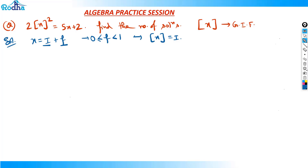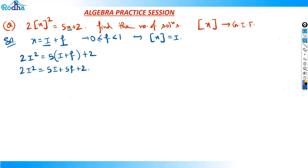By putting these values here, I'll get 2i² is equal to 5 — in place of x, I'll put i plus f. That's how you solve such a question. So 2i² is equal to 5i plus 5f plus 2. Now, 2i² minus 5i is equal to 5f plus 2. I'm just trying to put all the i values on one side and all the f values on the other side.